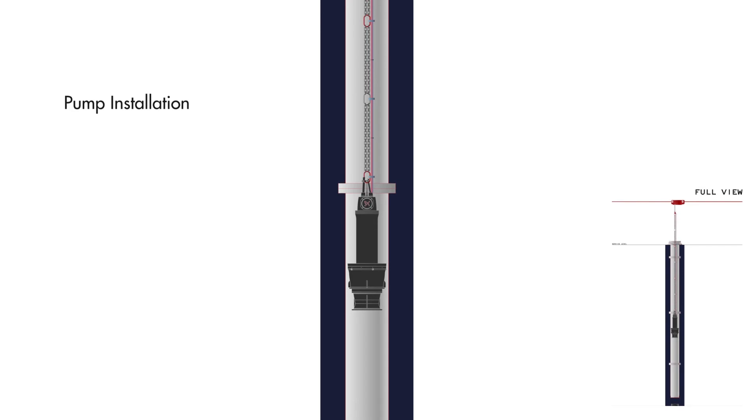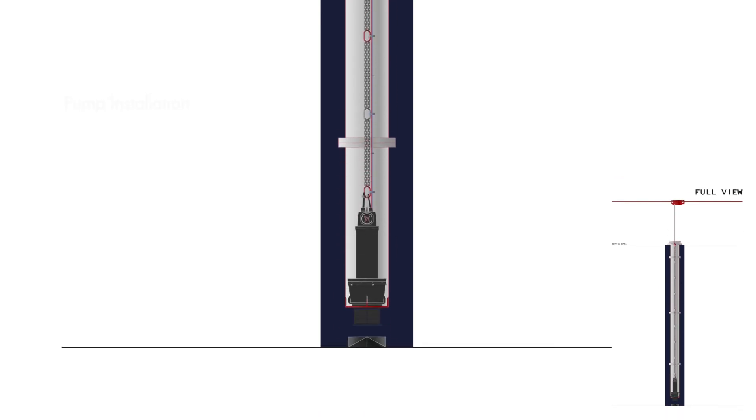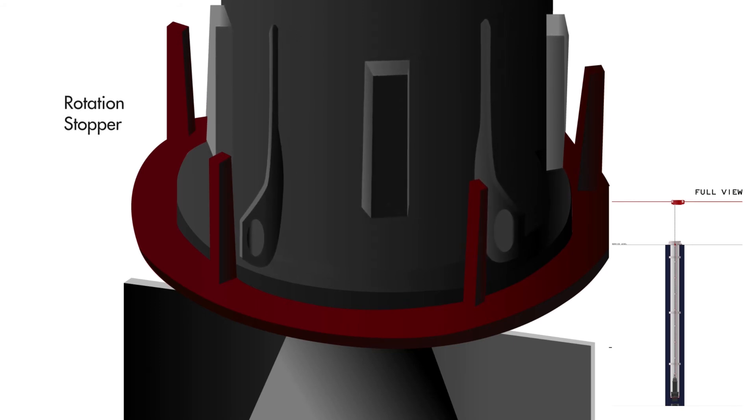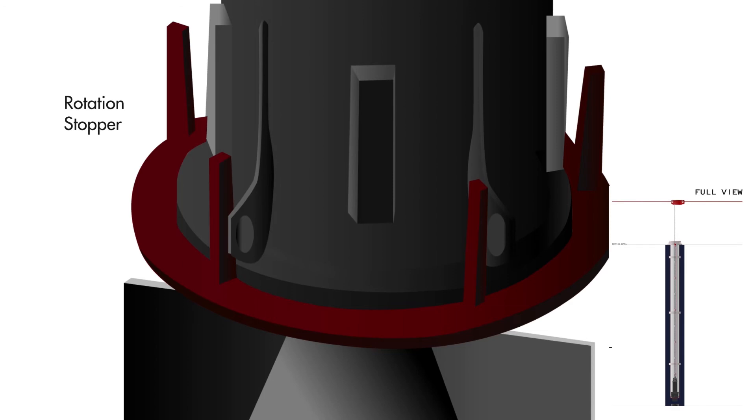With the pump almost in place on the seat ring, rotate the pump clockwise until the rotation stoppers on the suction casing and the rotation stoppers on the seat ring are against each other. Then the pump can be seated on the seat ring.